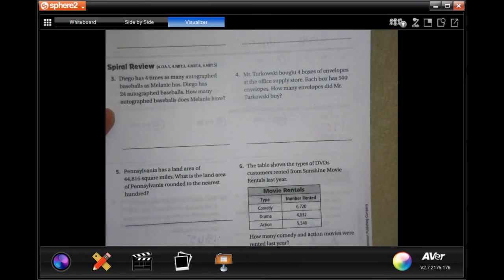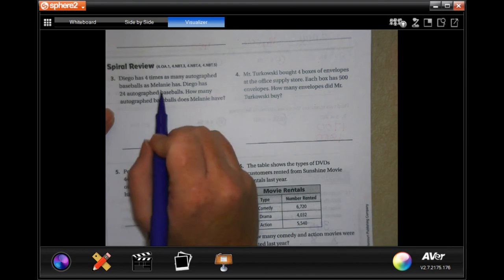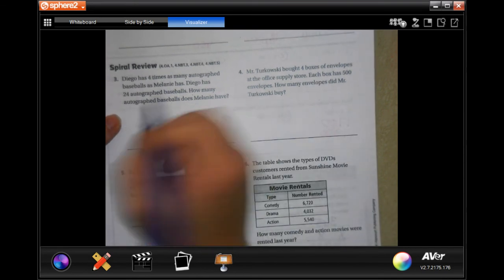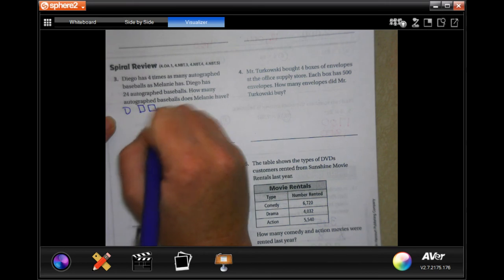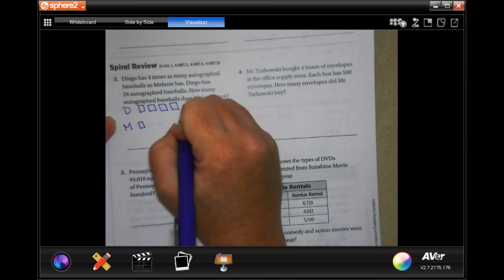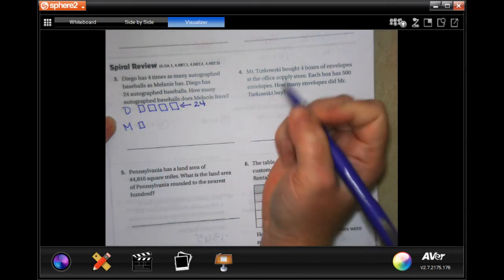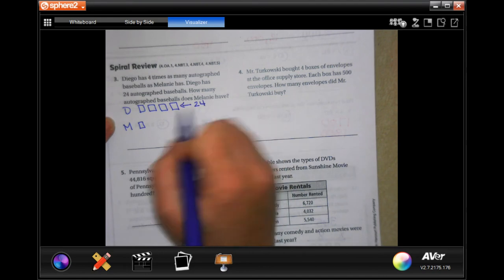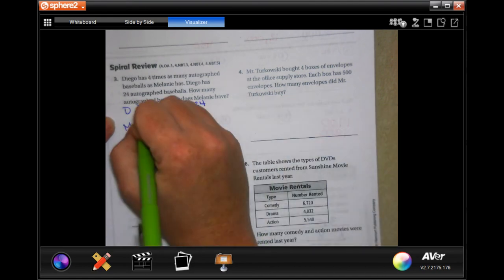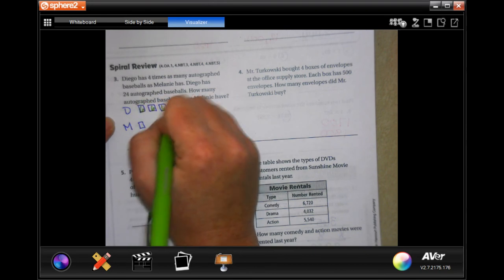It says Diego has four times as many autographed baseballs as Melanie. Diego has 24. How many does Melanie have? So if Diego has four times what Melanie has and he has 24, well, that means that that 24 divided by one, two, three, four means that he has six in each one of these.